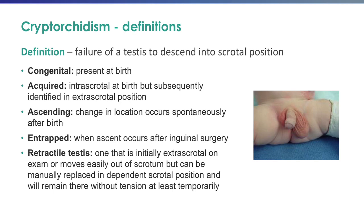We're going to move on next to undescended testes or cryptorchidism. A testicle that fails to descend properly into a scrotal position is consistent with an undescended testis. A congenital undescended testis is one not present in the scrotum at birth, whereas an acquired undescended testis has formally descended but has subsequently been noted outside of the scrotum. Ascending testicles represent a change in testicular location that occurs spontaneously after birth, as opposed to an acquired one which may occur after scrotal surgery or related to a prior retractile testis that has ascended. A trapped undescended testis occurs typically after inguinal surgery such as a hernia repair.